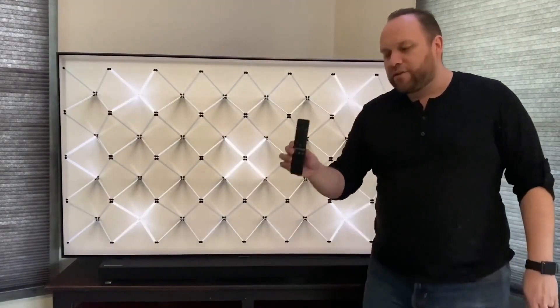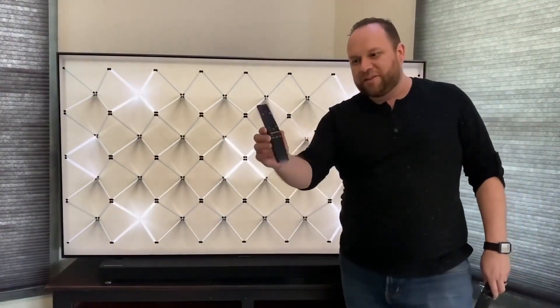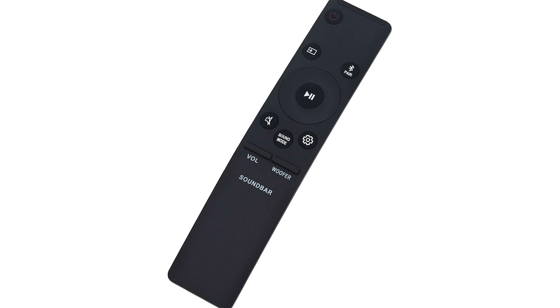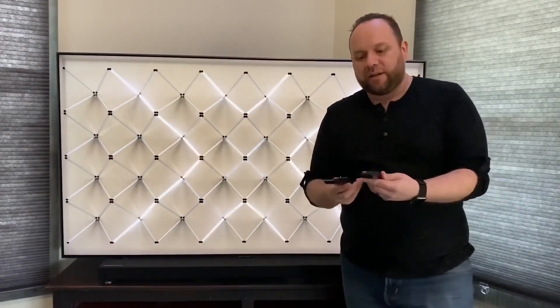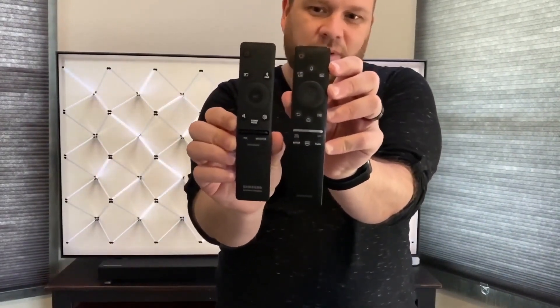Now the remotes on these things, they are really thin like that. So that makes it kind of easy to get lost in a couch or a chair. But they're really similar to the QLED TV remote. So this one here is the QLED remote. This one here is the soundbar remote. As you can see, there's not a whole lot of difference between the two.